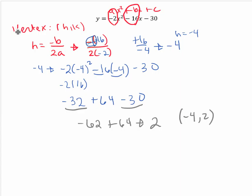Now we're going to find our roots by factoring. So we're going to factor negative 2x squared minus 16x minus 30.